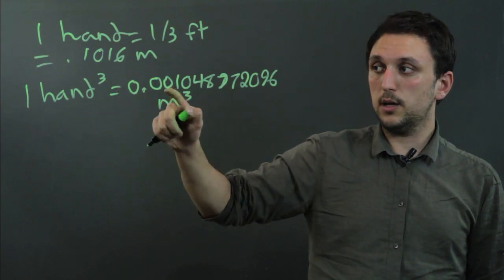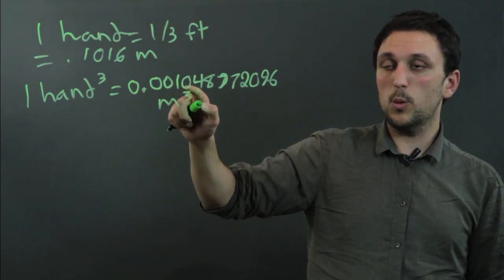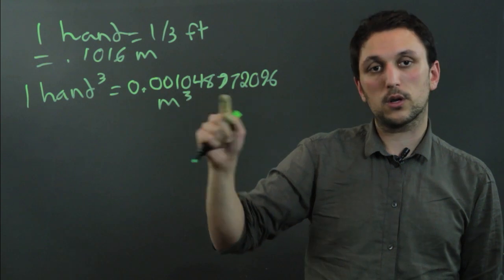So one hand cubed equals almost a little more than one one thousandth of a meter cubed.